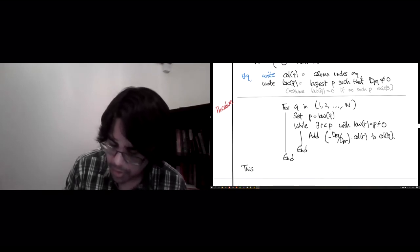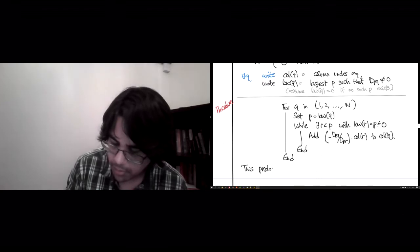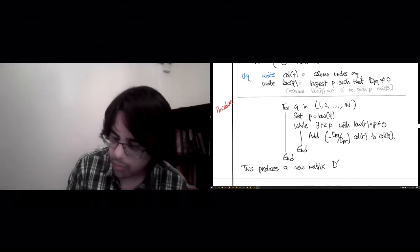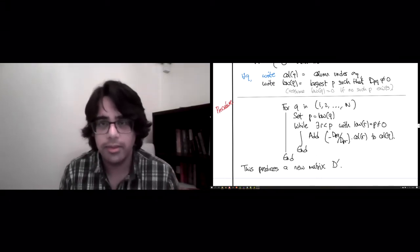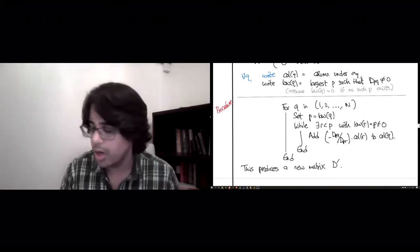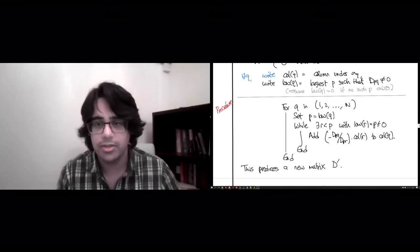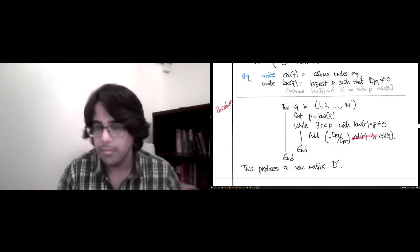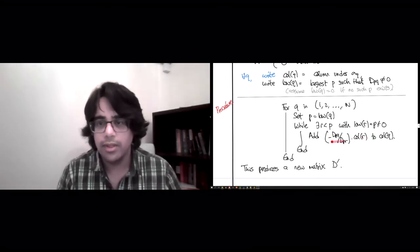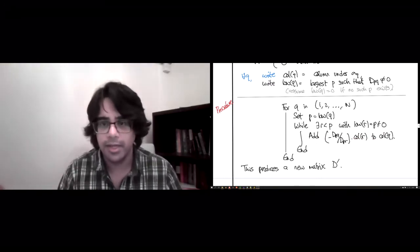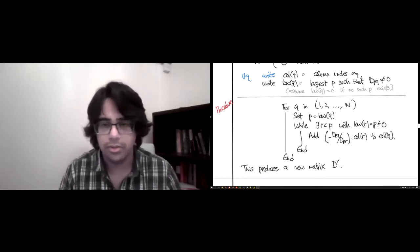This produces a new matrix, matrix D prime, which two things to note about this matrix D prime are, first of all, it's related to D by just column operations. So we haven't really changed much. It's just related to D by a change of basis. And if you bothered keeping track of all these column operations, you would be able to create an invertible matrix, which you can multiply D with on the right to get D prime. But there's no need to do that here.